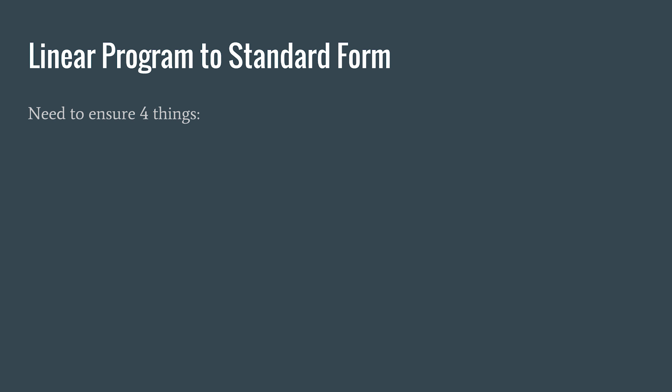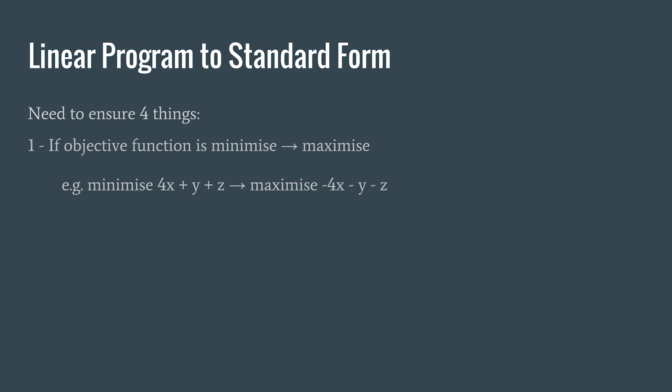We need to ensure four things. Number one: if the objective function is a minimize, we need to convert it into a maximize. This is easily done — we can just multiply through by minus one and convert the minimize into a maximize.